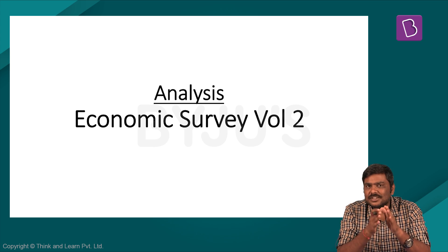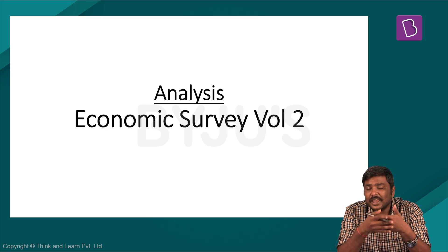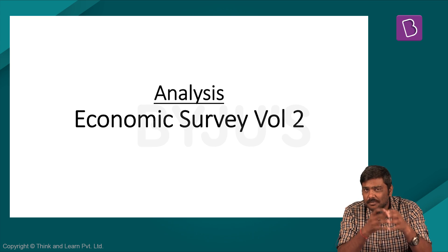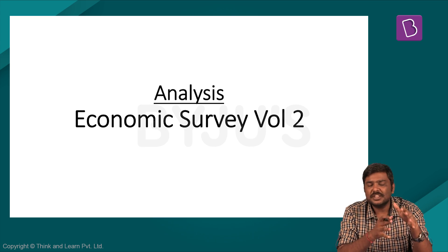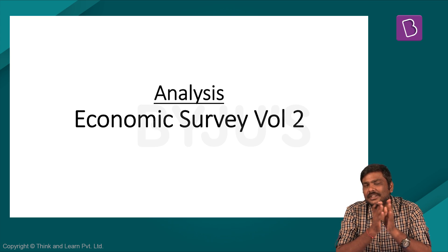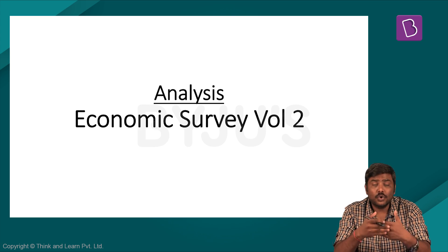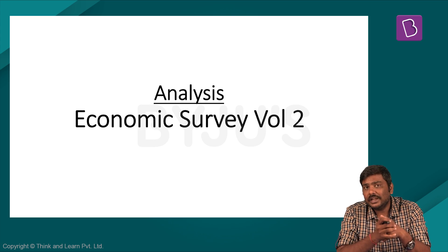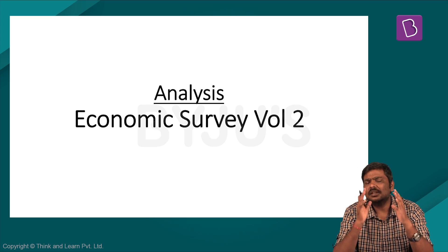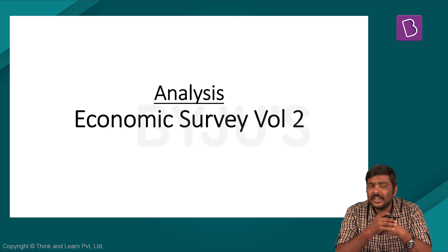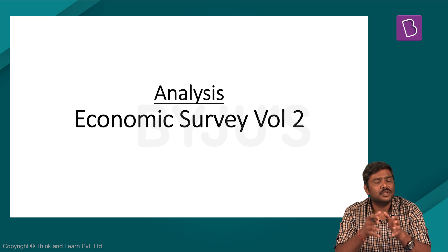Second point: there are certain chapters related to social issues such as healthcare and education. Whenever I come across these concepts, I will give you relevant information from this volume of the Economic Survey. Third point: the remaining chapters are basically the macroeconomic indicators you're supposed to know, which will help you in writing UPSC Prelims as well as UPSC Mains. Within these 10 chapters, certain ones are very important for GS Paper 3 and economic concepts in UPSC Prelims.